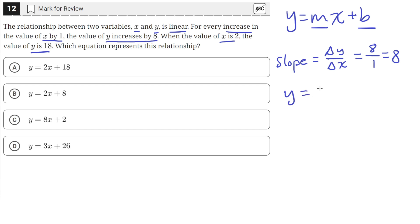So now our linear equation looks something like this. So to solve for the value of b, we can just plug in the second piece of information, which says that when x is 2, the value of y is 18. So we'll plug in 2 for x and 18 for y.